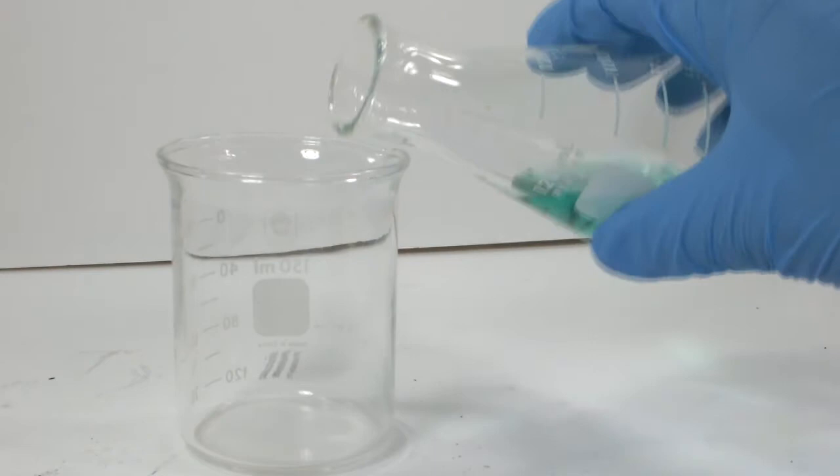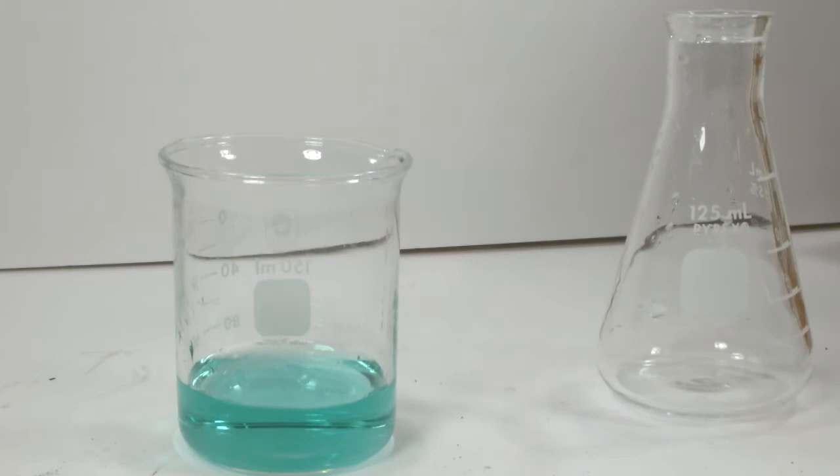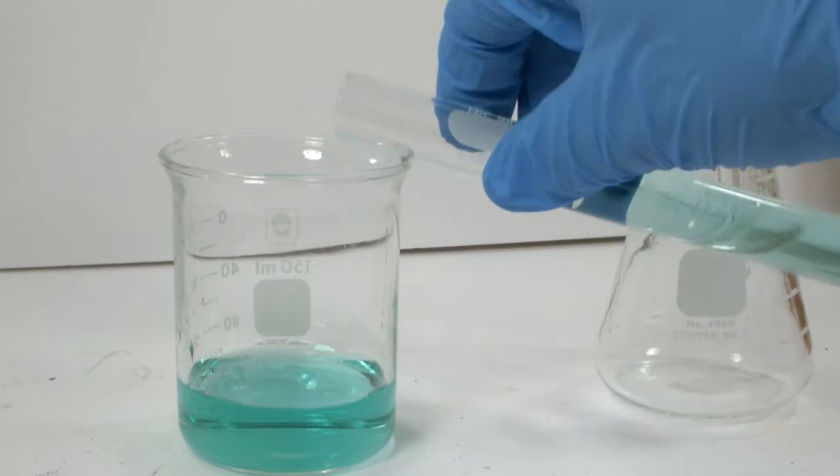Let's go back to the chloride while the sulfate chills. First, we'll put it into a beaker so it's easier to work with.